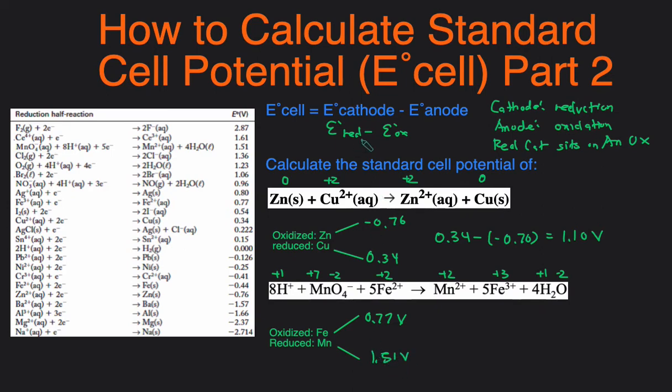Now we take the reduction minus the oxidation. So reduction was 1.51 minus the oxidation of 0.77. Let's plug that into our calculator, 1.51 minus 0.77, which will give us a voltage of 0.74 volts.